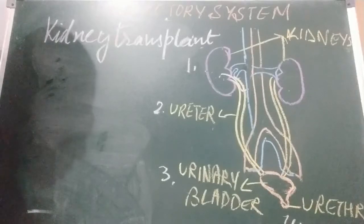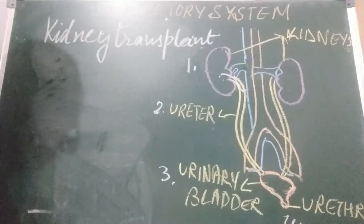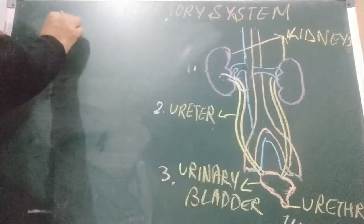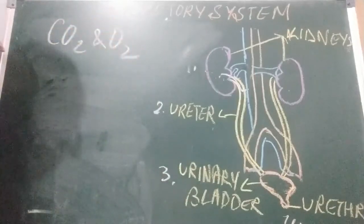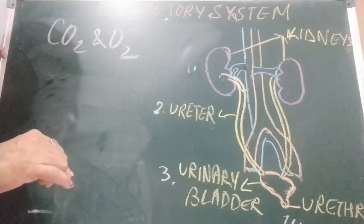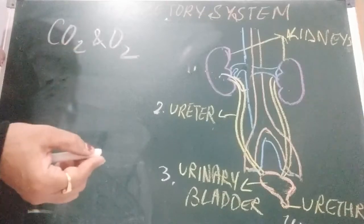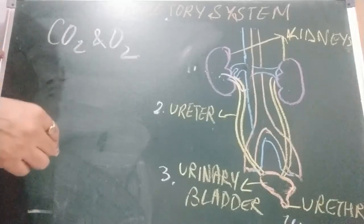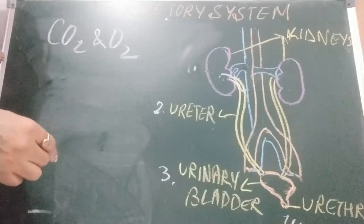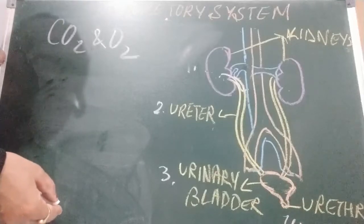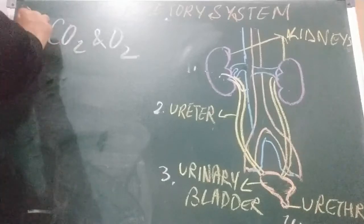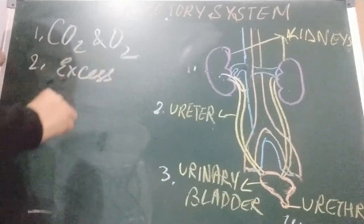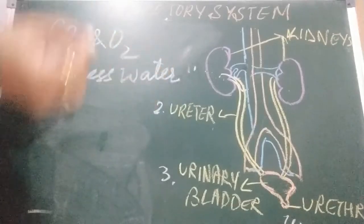Now we are going to discuss excretion in plants. The main products excreted by plants are carbon dioxide and oxygen. Carbon dioxide is formed as a result of respiration, and oxygen is formed as a result of photosynthesis. During the day, plants release excess oxygen, and during the night they excrete carbon dioxide in excess. Plants also excrete excess water through the process of transpiration, removing it through stomata.